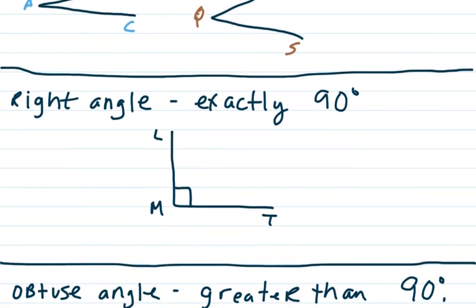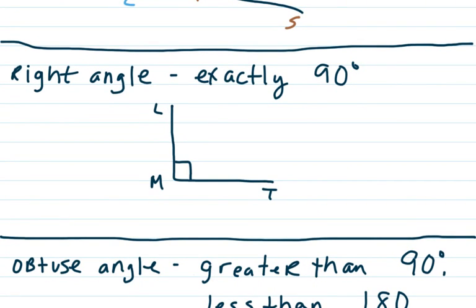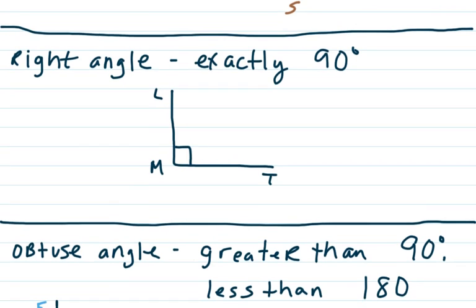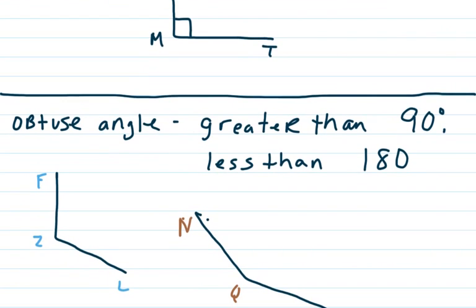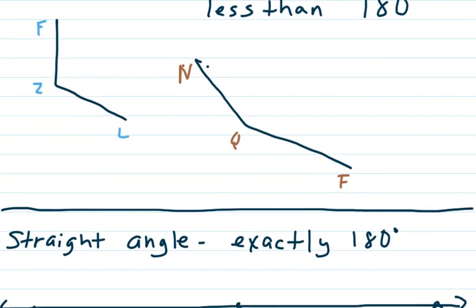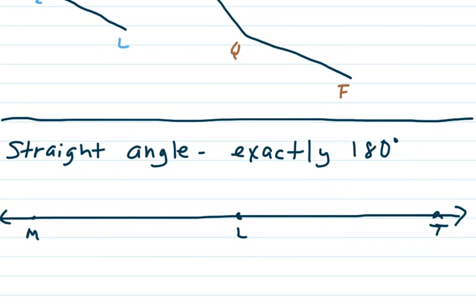A right angle is exactly 90 degrees. An obtuse angle is greater than 90 degrees but less than 180 degrees. And a straight angle is exactly 180 degrees.